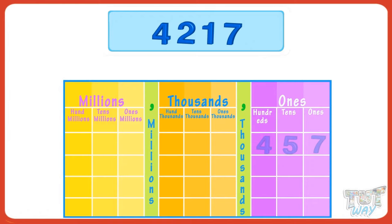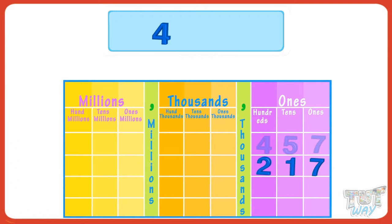It will be read as four hundred and fifty-seven. Now let's read a four-digit number. Write it below the place value chart starting with the ones place: seven below ones, one below tens, two below hundreds, four below thousands.